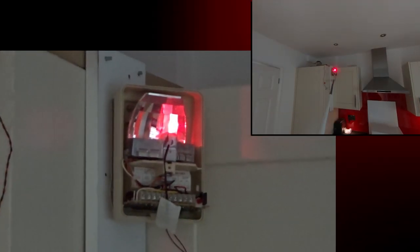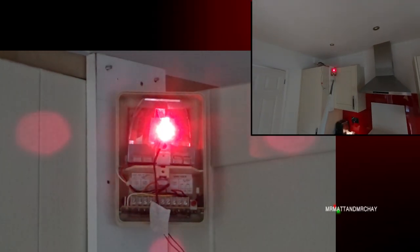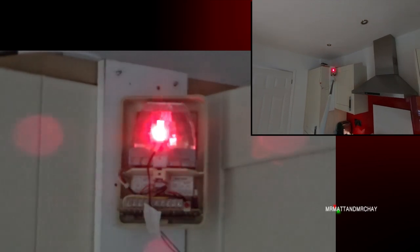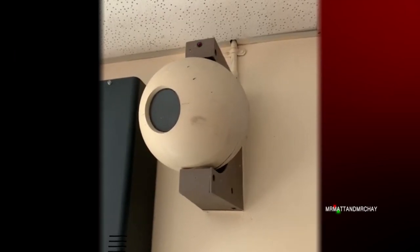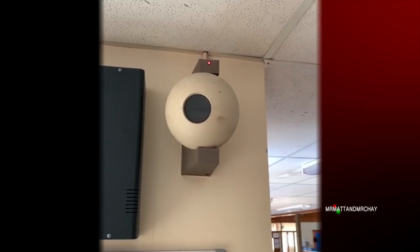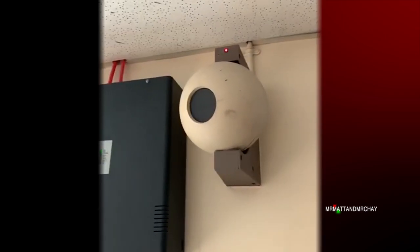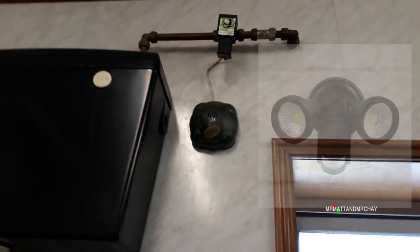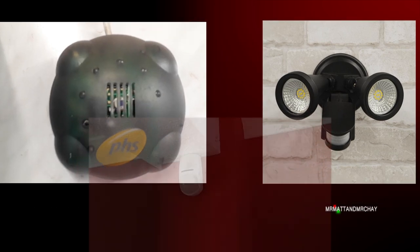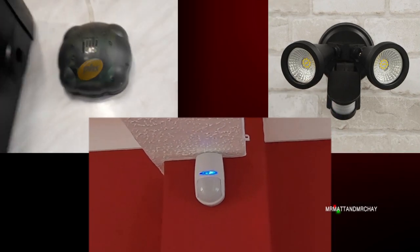The PIR motion detector has been around since the early 1980s. Over the years there have been hundreds, possibly thousands of designs. They are used for a whole host of applications, from flushing toilets, switching lights on, to detecting intruders. Before we get going, here is a brief history.